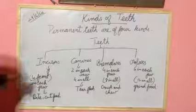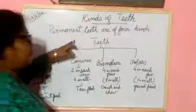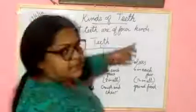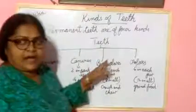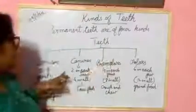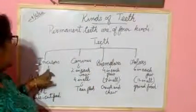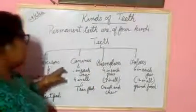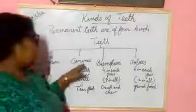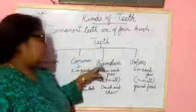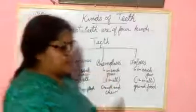Kinds of teeth. Permanent teeth are four kinds. What are they? Incisor, canine, premolar and molar.